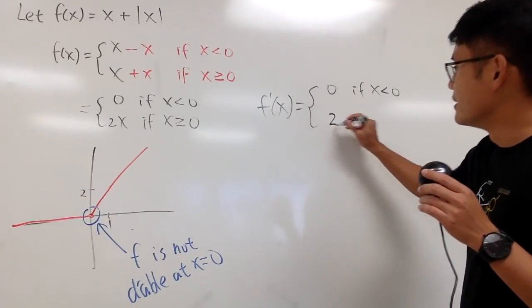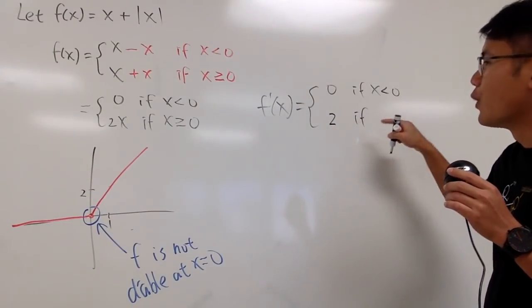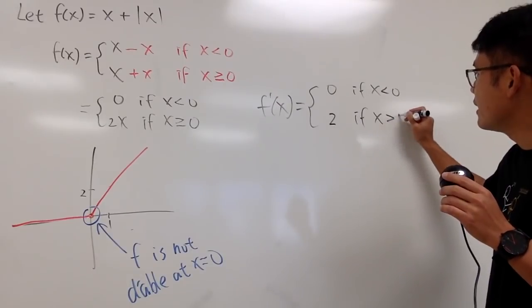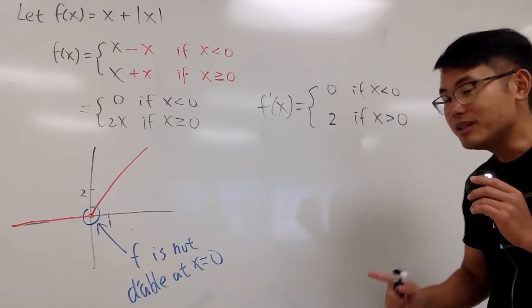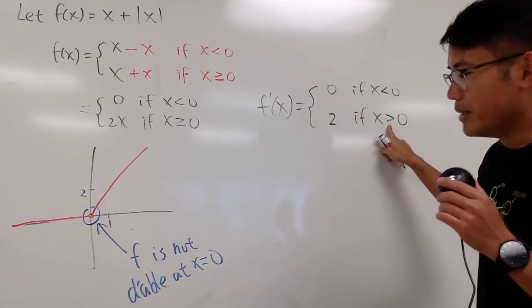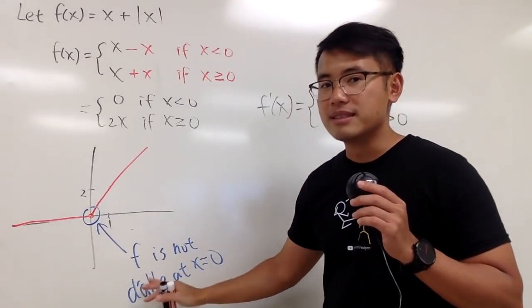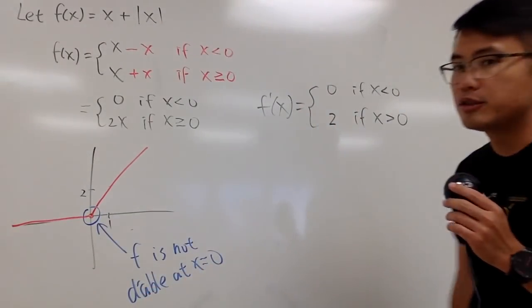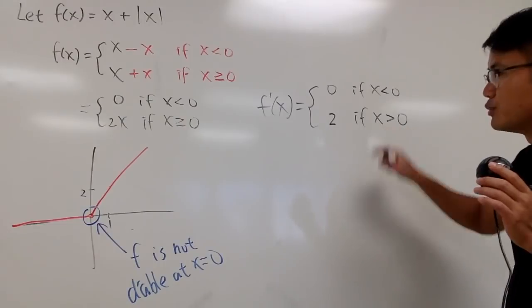So, it's 2. And this is happening when x is greater than 0. And notice, I don't have equal sign here because the derivative does not exist when x is exactly 0. So, I do miss out the 0 right here.